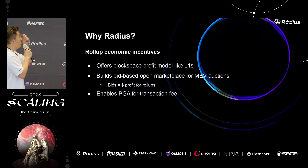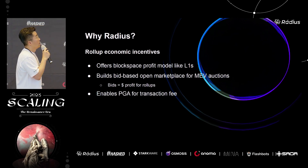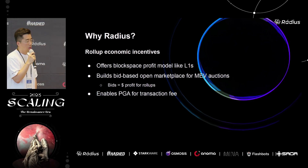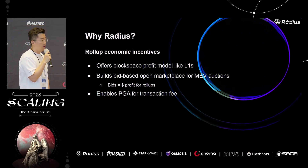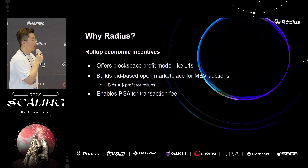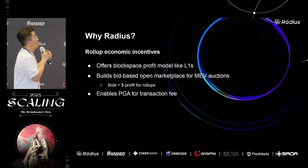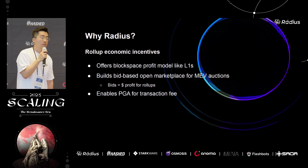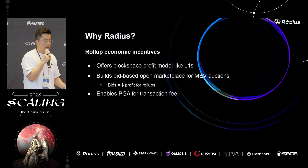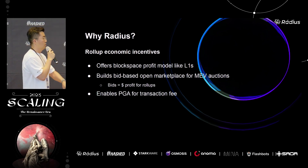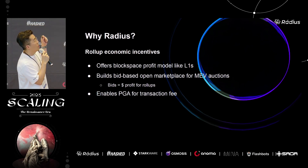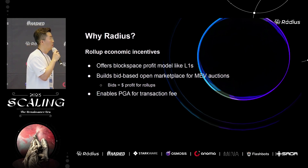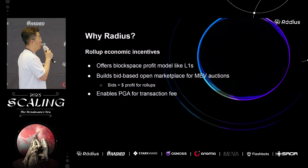Radius's sequencer layer also wants to support economic incentives for rollups by maximizing good MEV — not harmful MEV — such as arbitrage, liquidation, and cross-rollup MEV. We can make a profit from these and distribute it to rollups. We offer a block space profit model like layer one, and we're building an open marketplace for traders and researchers to join and make profit, which is also given to rollups. This allows priority gas auctions to happen, making transaction fees also profitable for rollups.